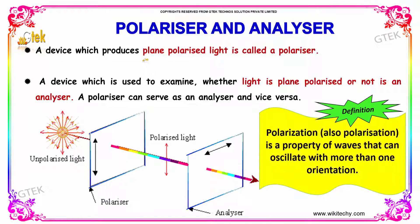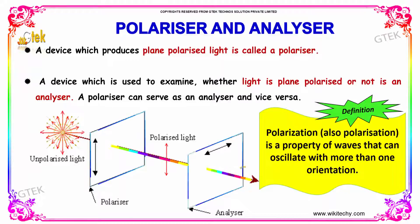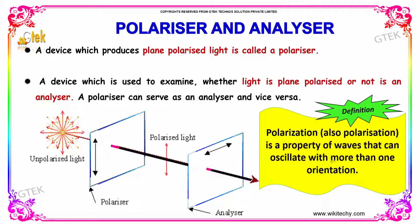A device which produces plane polarized light is called a polarizer. A device which is used to examine whether light is plane polarized or not is an analyzer. A polarizer can serve as an analyzer and vice versa too. By definition, polarization is a property of waves that can oscillate with more than one orientation.